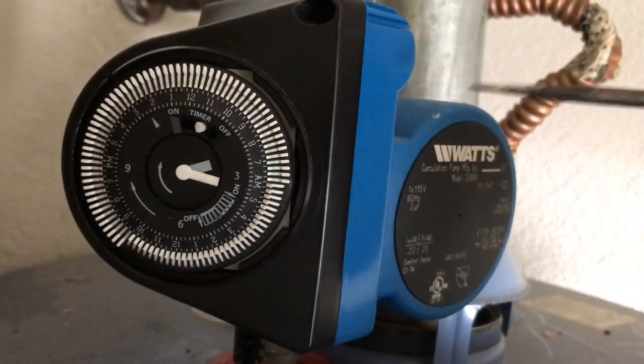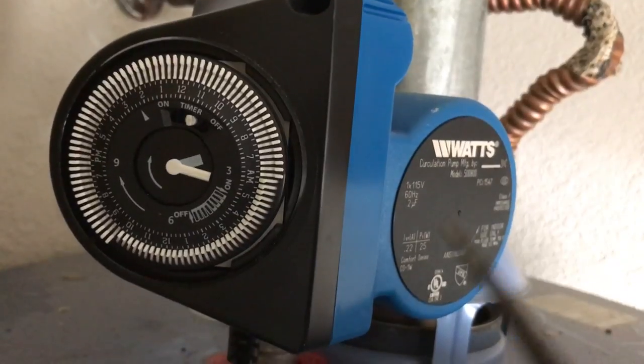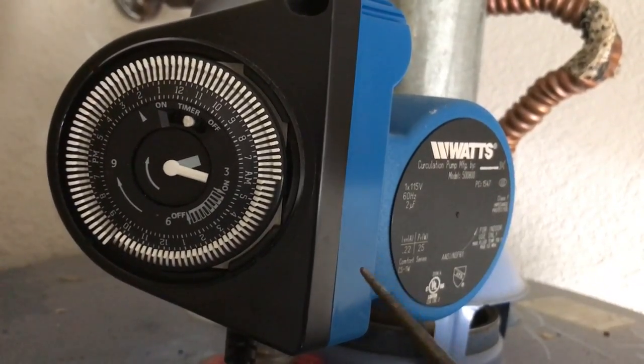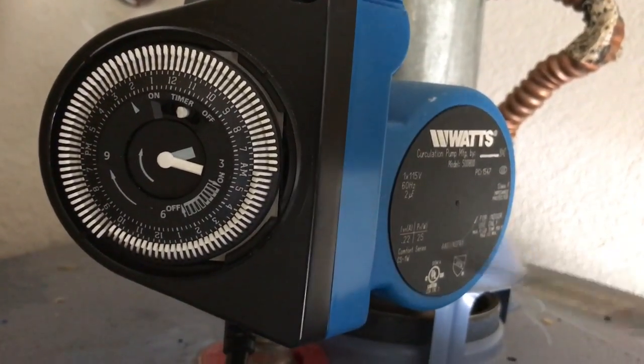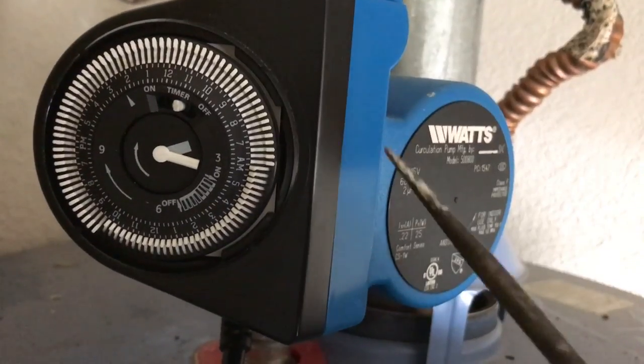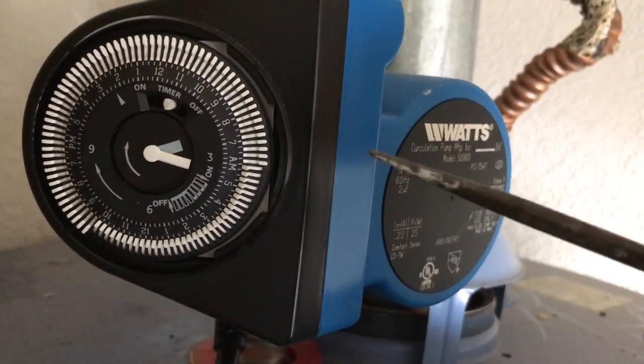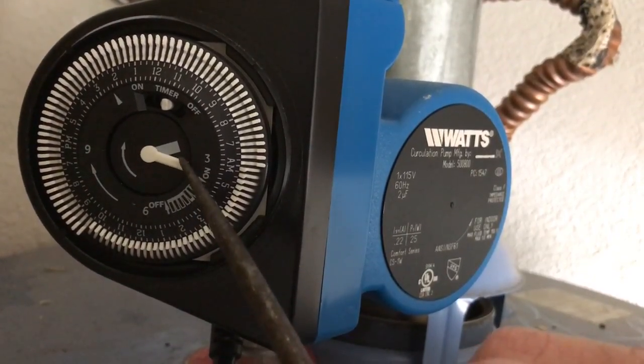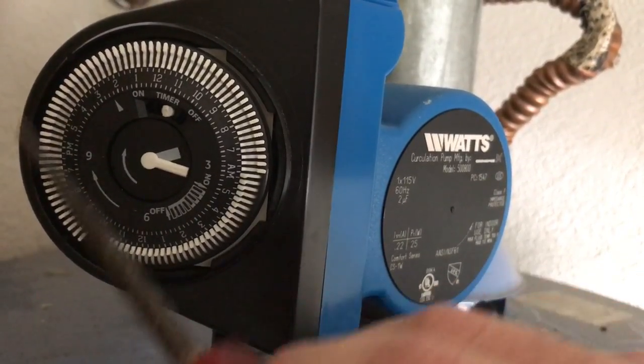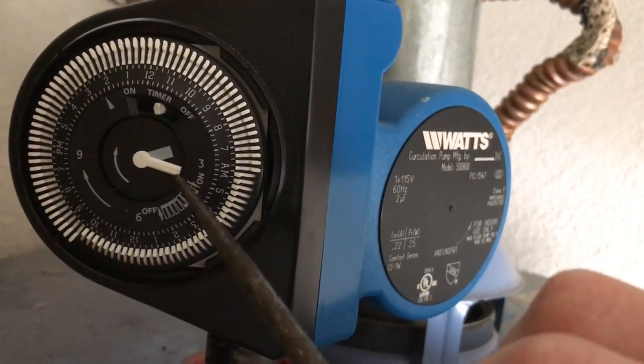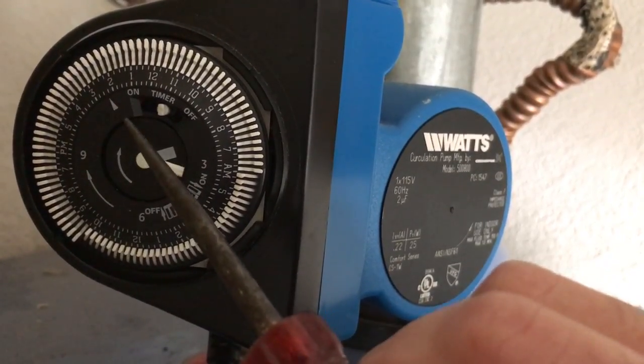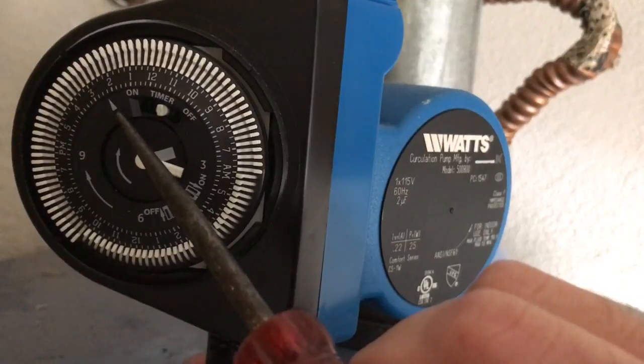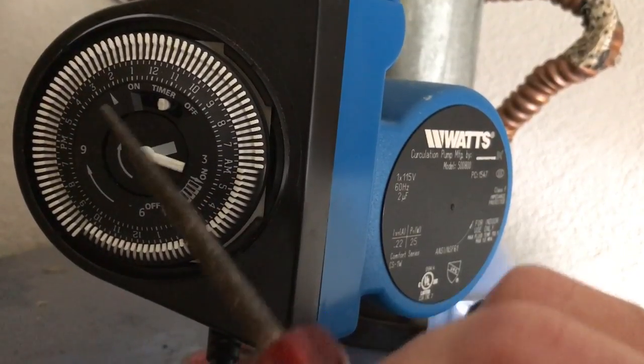The very first step is you have to tell the timer what time it currently is so it knows when to be on and when to be off. So you have to set the internal clock of the system. The way you do that is by rotating this piece right here. You don't actually spin the dial. You move this piece until this arrow right here reaches the appropriate time.